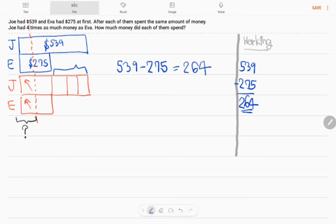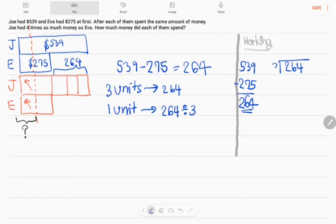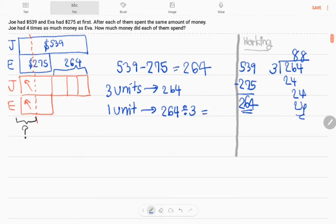Okay, now we know two units. One unit equals $264 divided by three. That will give us $88.